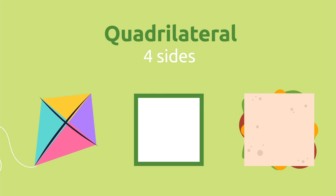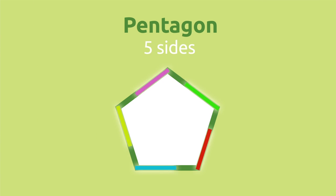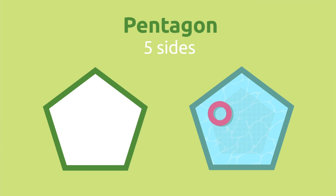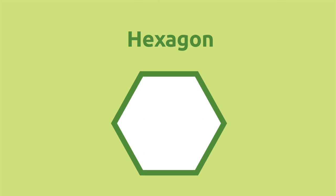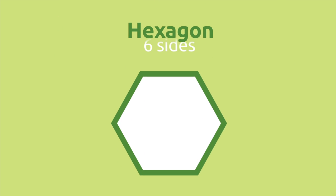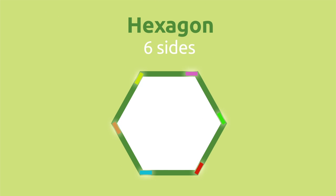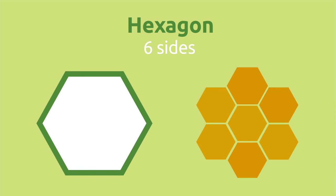Pentagons have five sides — this swimming pool has the shape of a pentagon. Hexagons have six sides — these honeycomb cells have the shape of a hexagon.